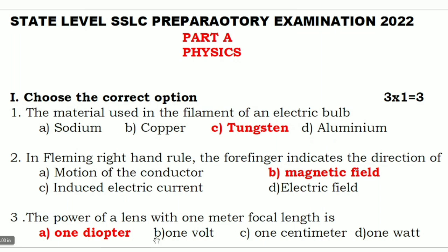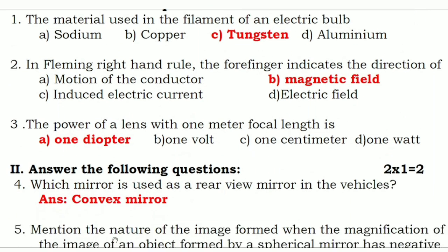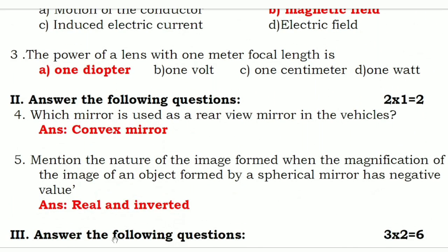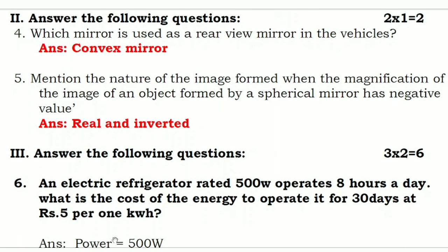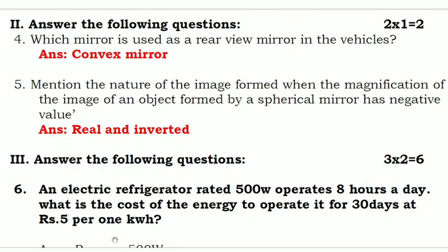Third question: the power of a lens with one meter focal length is — Option A: one diopter, Option B: one ohm, Option C: one centimeter, Option D: one ohm. The power of a lens with one meter focal length is one diopter, so Option A — one diopter — is the correct answer.